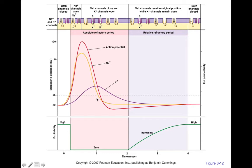This peak zone is the absolute refractory period — can we generate another action potential during this time? No. What's the significance? You don't want to lose information; you don't want action potentials to overlap. What about the relative refractory period? You can generate another action potential, it's just relatively more difficult to do so — that's why we call it the relative refractory period.